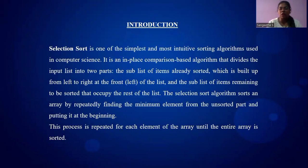The sublist of items already sorted, which is built up from left to right at the front of the list, and the sublist of items remaining to be sorted that occupy the rest of the list.